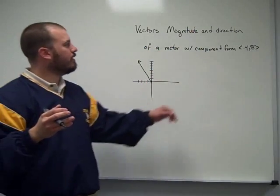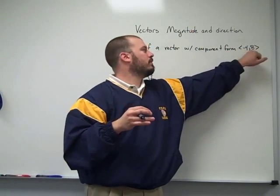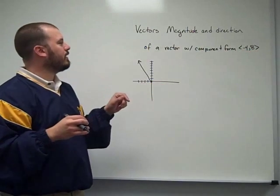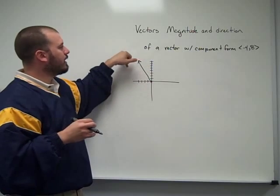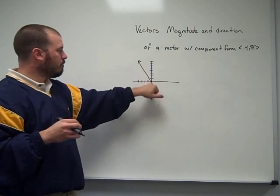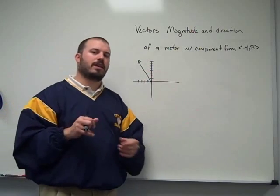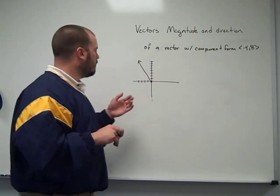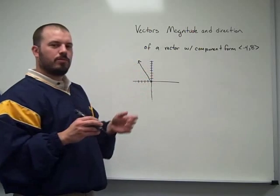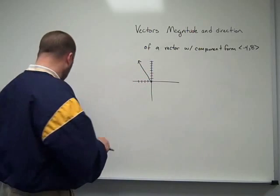All right, and that is a vector with component form negative 4, positive 8. Now I could label the coordinates 0, 0 and negative 4, 8 for my initial point and my terminal point and do exactly like I did in the earlier part of this video. Or what I can do is use those component form pieces and draw them in.